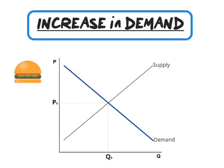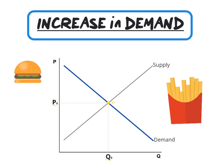Our starting point: price on the y-axis and quantity on the x-axis. We have the downward-sloping demand curve and the upward-sloping supply curve. Where the demand and supply curves intersect, this gives us equilibrium with the corresponding equilibrium price and equilibrium quantity.